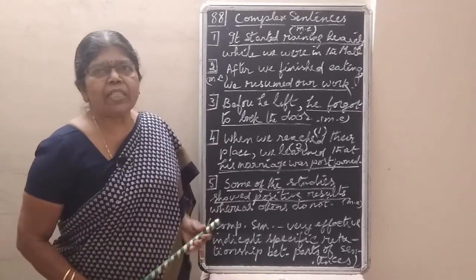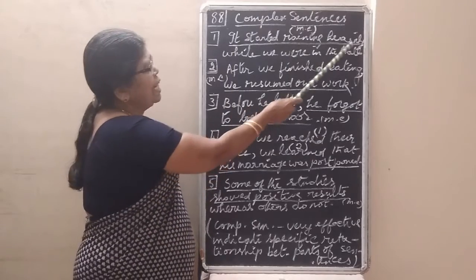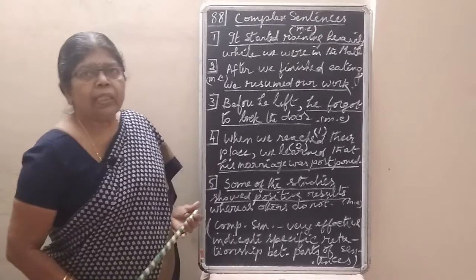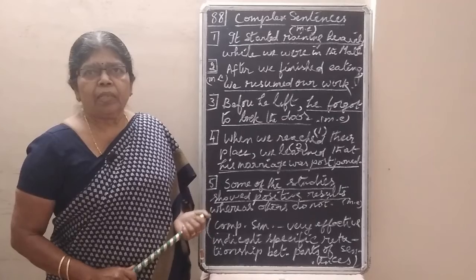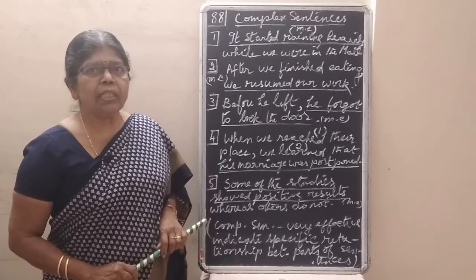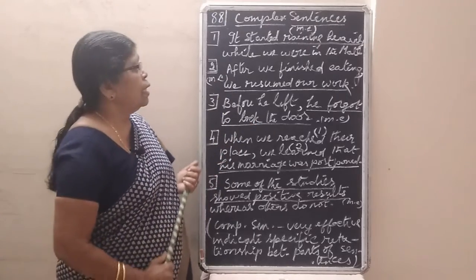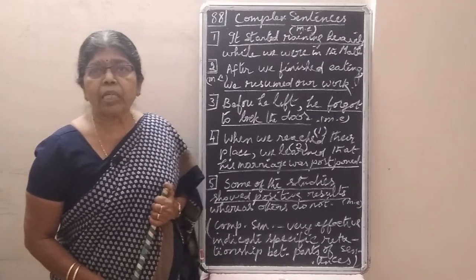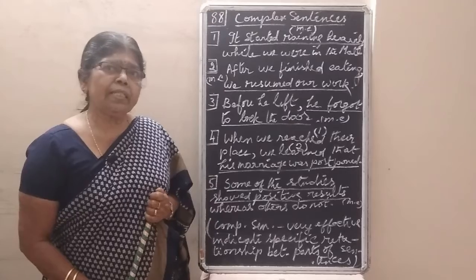I have given just five sentences, and the first is: 'It started raining heavily while we were in the mall.' We have seen many important subordinating conjunctions such as when, before, after, whenever, wherever, since — many subordinating conjunctions.